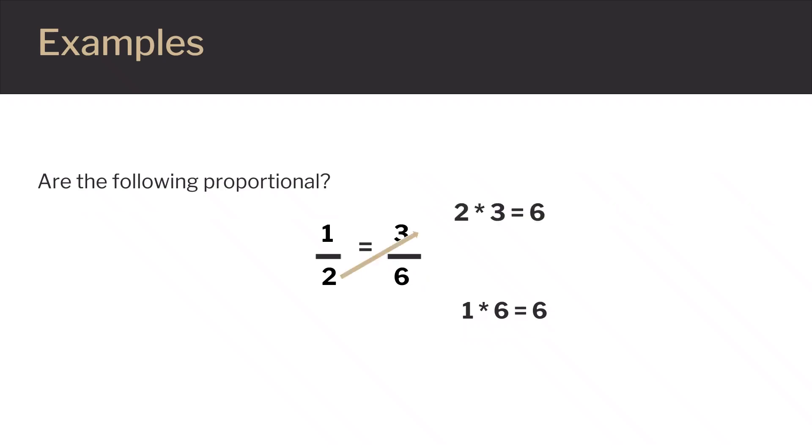Now we'll do the other diagonal which is the bottom of the left fraction multiplied by the top of the right fraction. This gives us three times two which is also six. Since six is equal to six we would say yes these two fractions are proportional. This also tells us that these fractions are equal to each other. If you reduce three-sixths by dividing the top and bottom by three you get one-half.